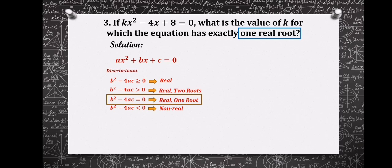Now the given equation is kx² - 4x + 8 = 0. Its discriminant is b² - 4ac = 0.